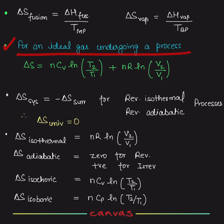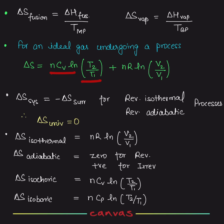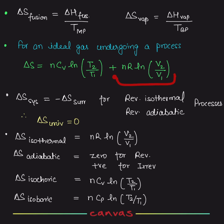For an ideal gas in any process — isothermal, adiabatic, isochoric, or whatever — the standard formula is: Delta S = nCv ln(T2/T1) + nR ln(V2/V1). Always remember this formula. If temperature is constant (isothermal), then T2 equals T1, so ln(T2/T1) equals zero, and only the second term remains. If it is isochoric, then V1 equals V2, so ln(V2/V1) equals zero, and only the first term remains.